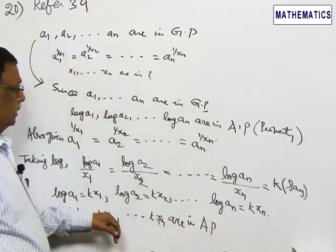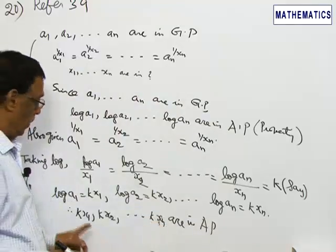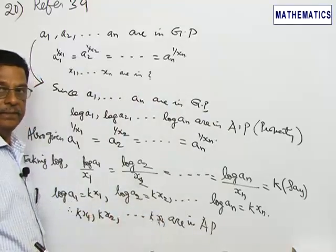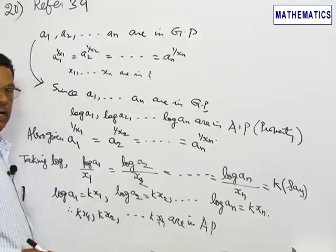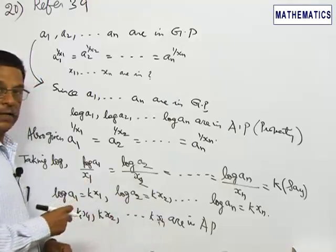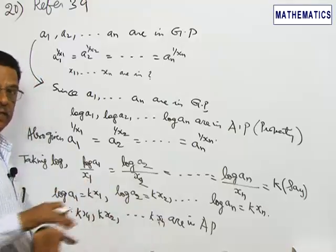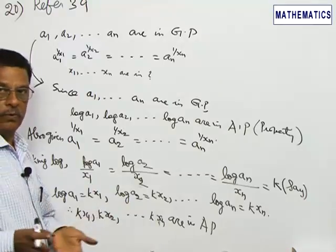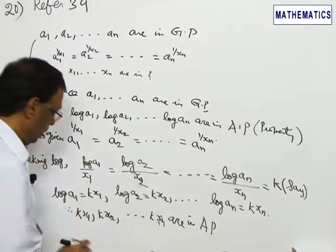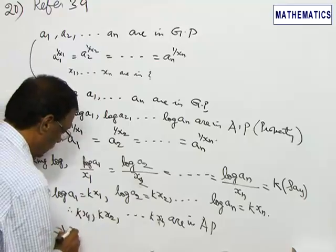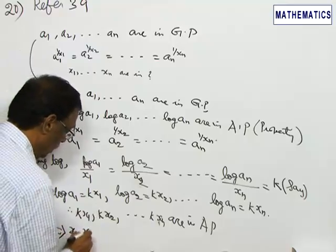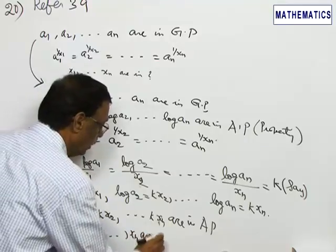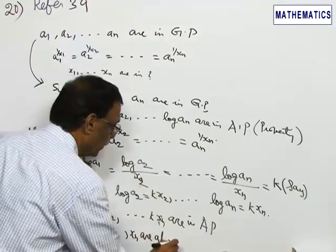These n numbers are in AP. The common factor to all these numbers is K. If you remove the common factor K, the sequence will still be in arithmetic progression — the nature will not be altered. Therefore, x₁, x₂, ..., xₙ are also in AP.